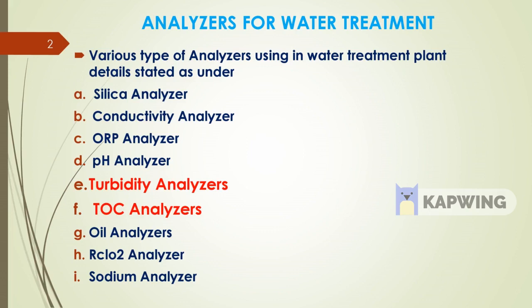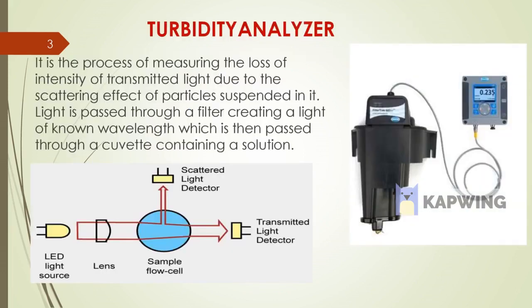Now we discuss the turbidity analyzer. It is the process of measuring the loss of intensity of transmitted light due to the scattering effect of particles suspended in the light path. It passes through a filter creating light of a known wavelength, which then passes through a cuvette containing the solution.